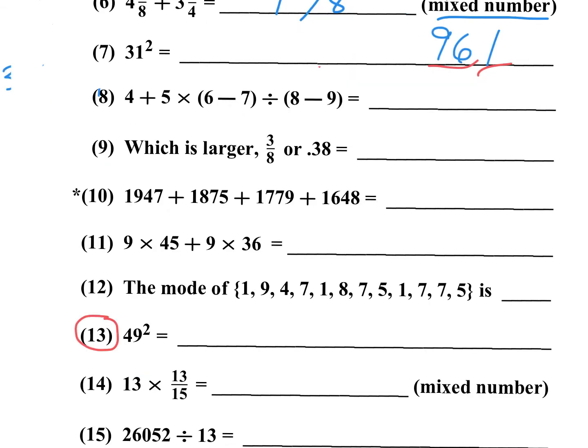The next problem is number 8. 4 plus 5 times, this is a negative 1. And this is a negative 1. So you're going to have negative 1 divided by negative 1. That's a positive 1. 5 times a positive 1 is just 5, positive 5 plus 4 is 9.